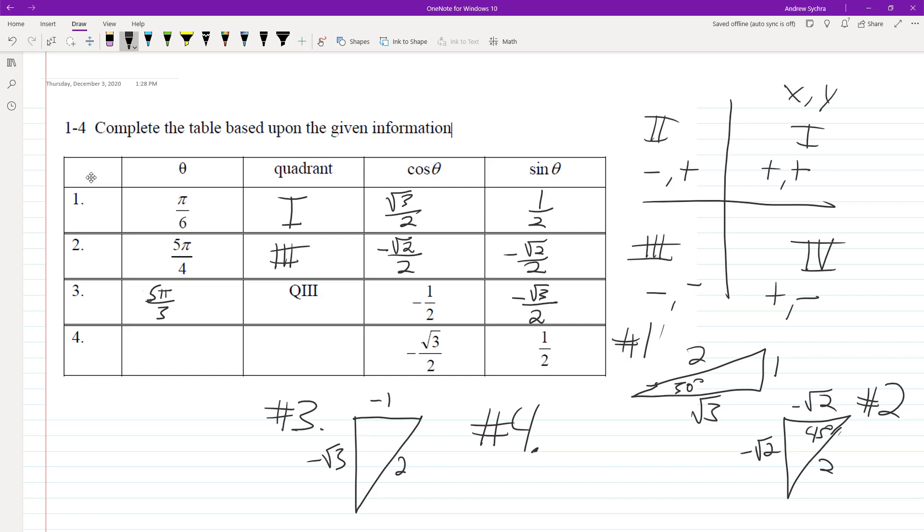Alright, so we know with 4 that this is going to be cosines, so that's the numerators left. Sines positive though, so that's going to be in quadrant 2.